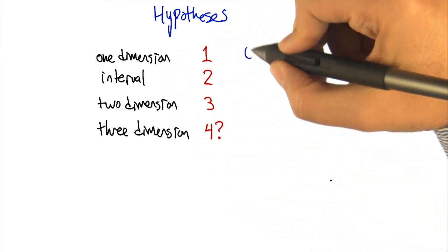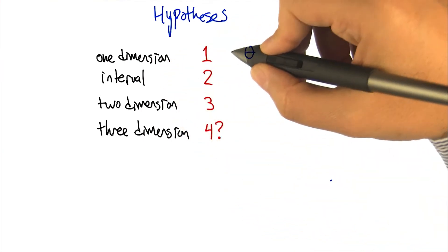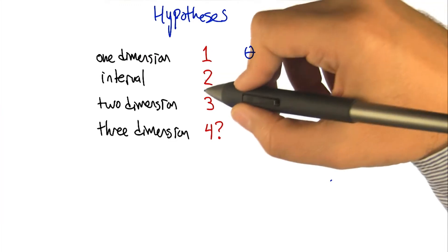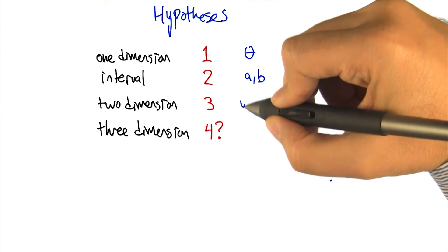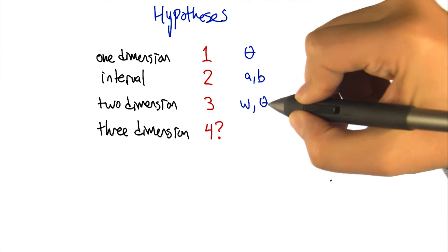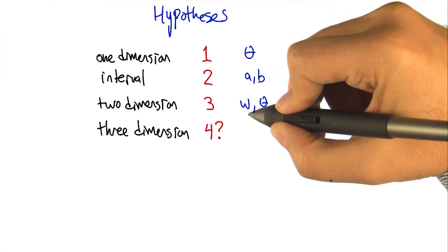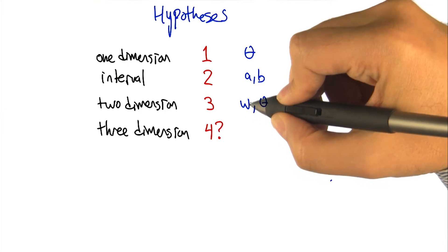That the hypothesis spaces in each of these cases, here, they were defined by this parameter theta. In the interval case, it was defined by A and B. In the two dimensional case, it was defined by W and theta. And W was in two dimensions. So this was actually a vector of size two.